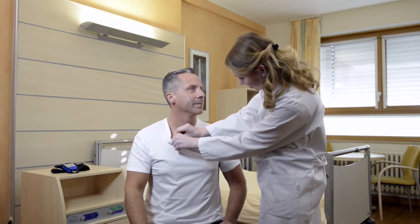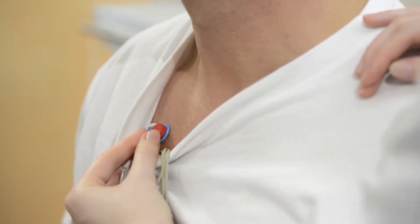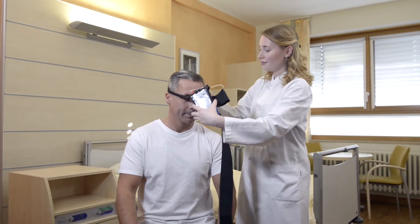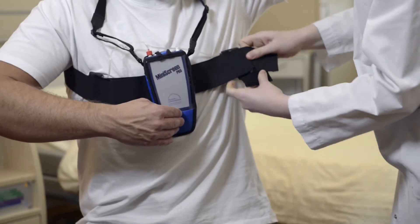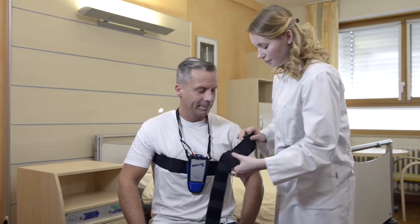The ECG measures cardiac activity. The thorax and abdomen belts analyze abdominal and thoracic movements for the classification of sleep apneas.